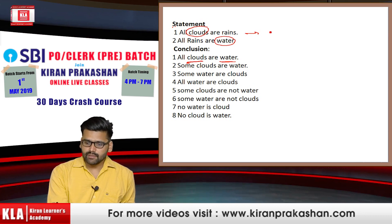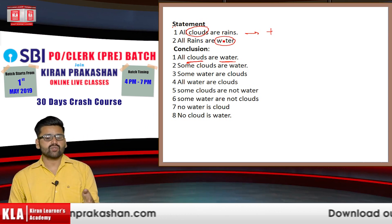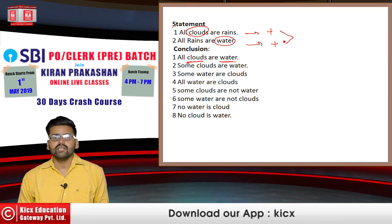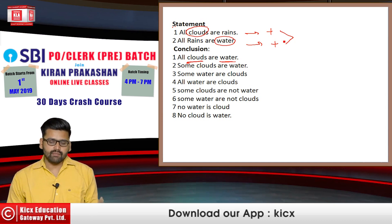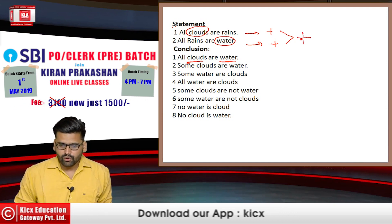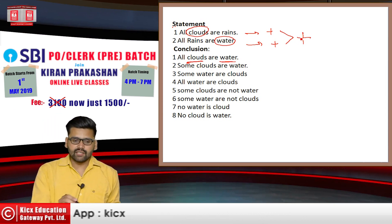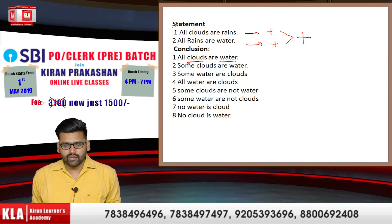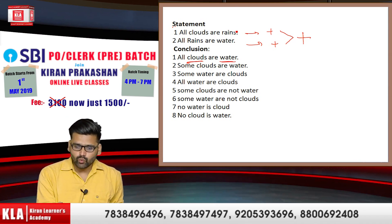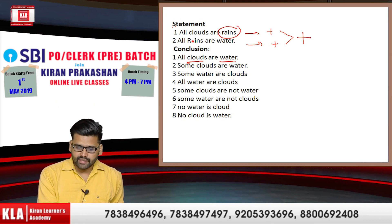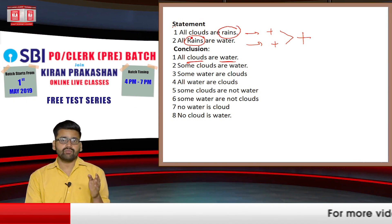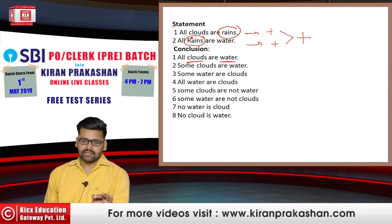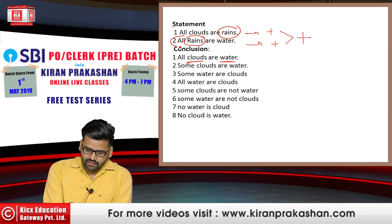Both statements are positive. The first is: All clouds are rain. Second is: All rains are water. Since both statements are positive and both are connected by a common word — the common word here is rain — and the quantifier for rain in the first statement is 'all', this connects properly.